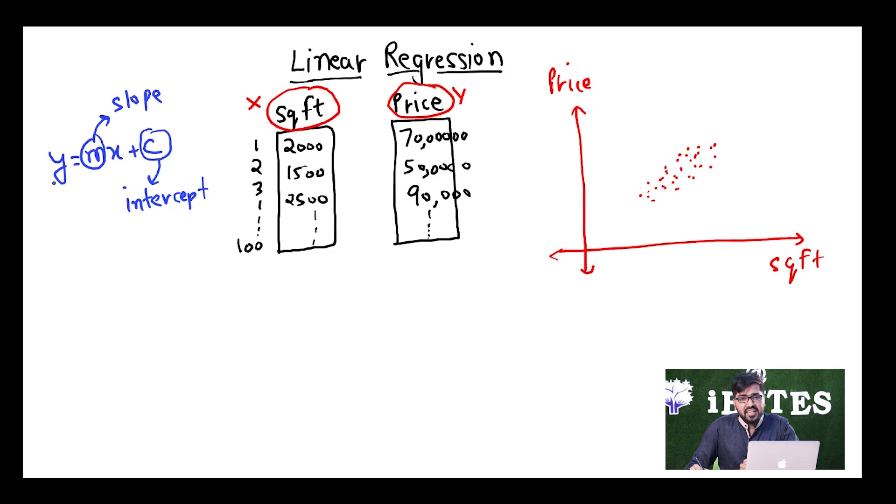y is our price and x is our square feet. So if we know the values of m and c, like if we are able to find out the optimal values of m and c, then if someone gives me the value of x that is square feet, our y is going to come out. So we are able to get y accordingly.